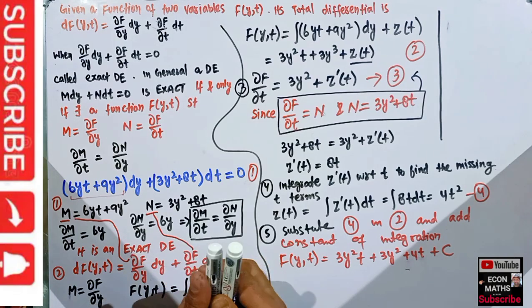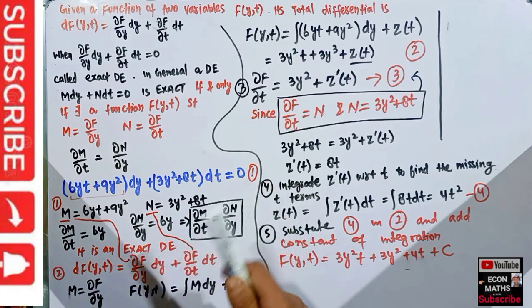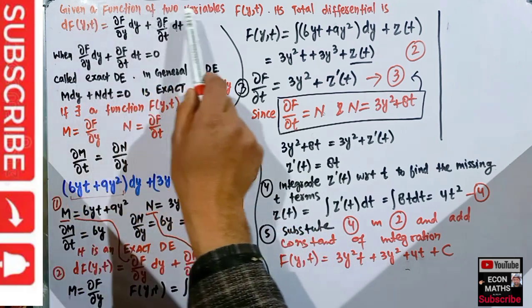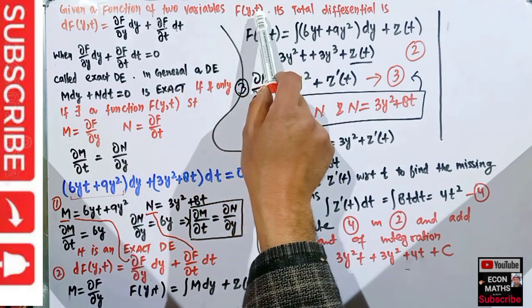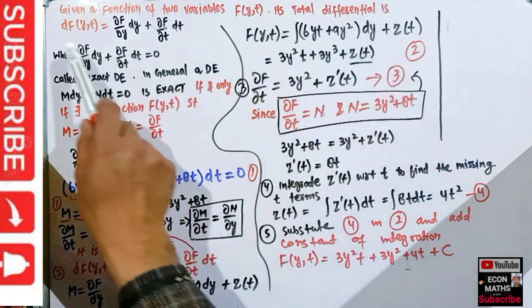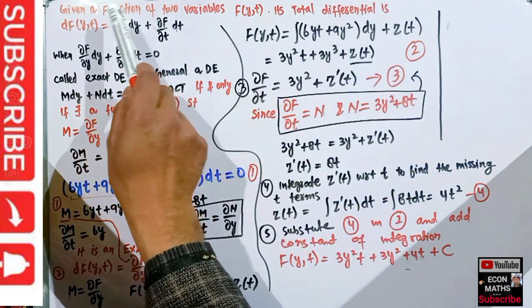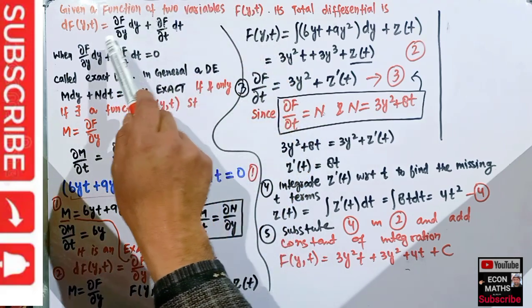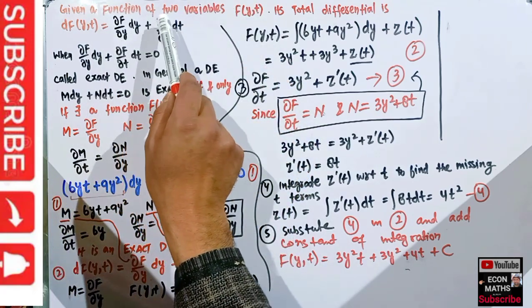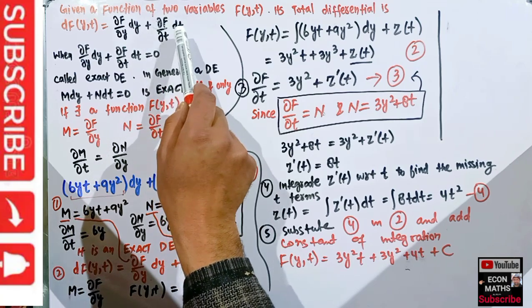In this video we will learn about exact differential equations and their solutions. Given a function of two variables f(y,t), its total differential can be written as df(y,t) = (∂f/∂y)dy + (∂f/∂t)dt.